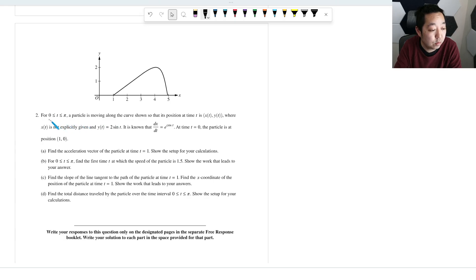So I have a particle from zero to π moving along the curve whose position is given by X is not explicitly given and Y of T is given by that. It is known that dx/dt equals this. At time t equals zero, the particle is at position (1,0). Find the acceleration vector at time t equals one. Show the setup for your calculations. All right.